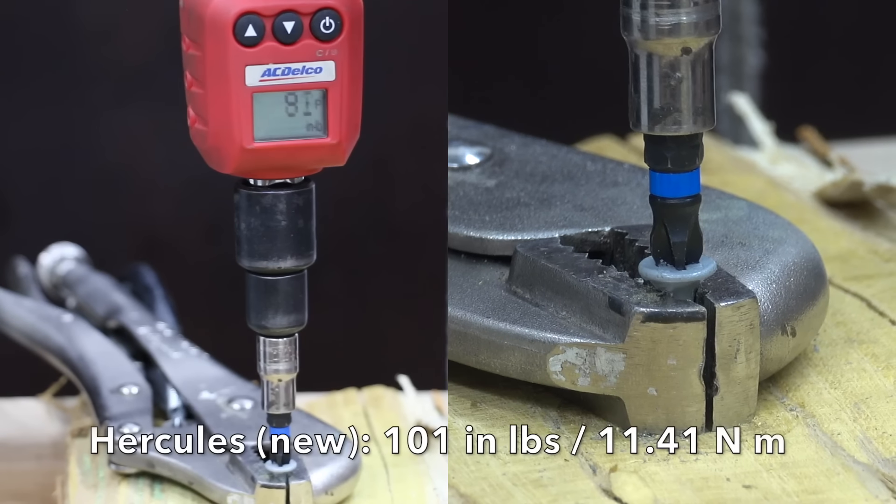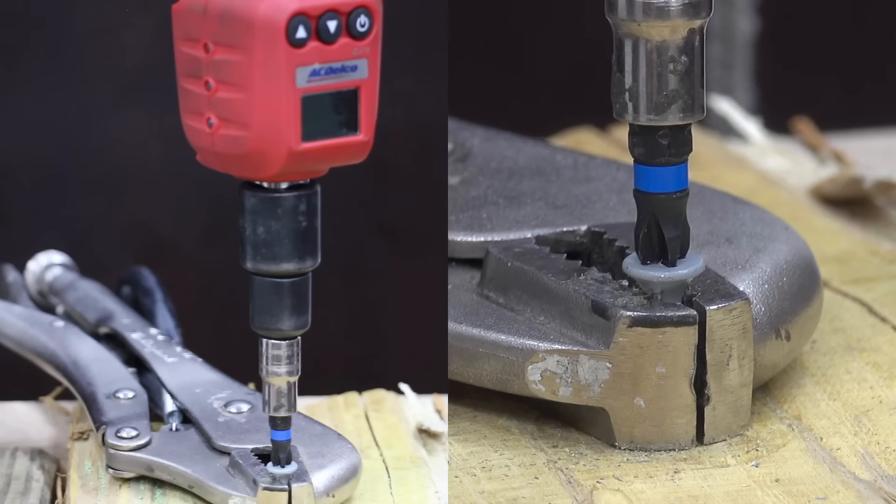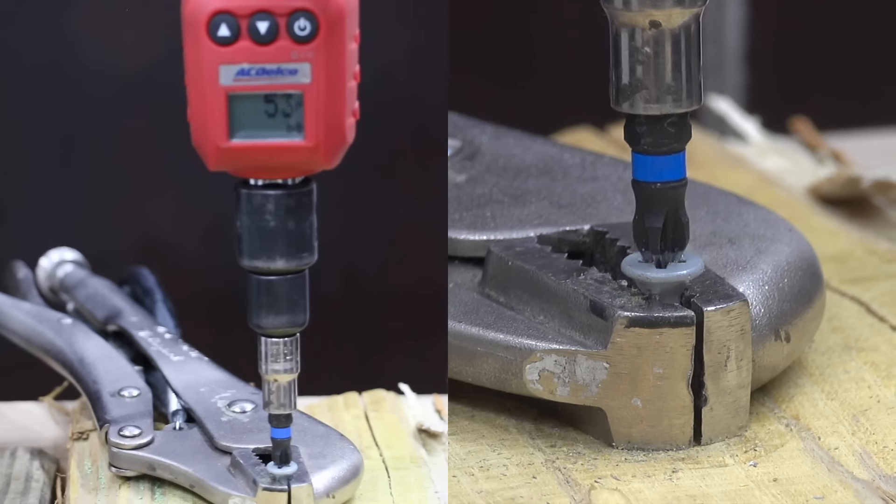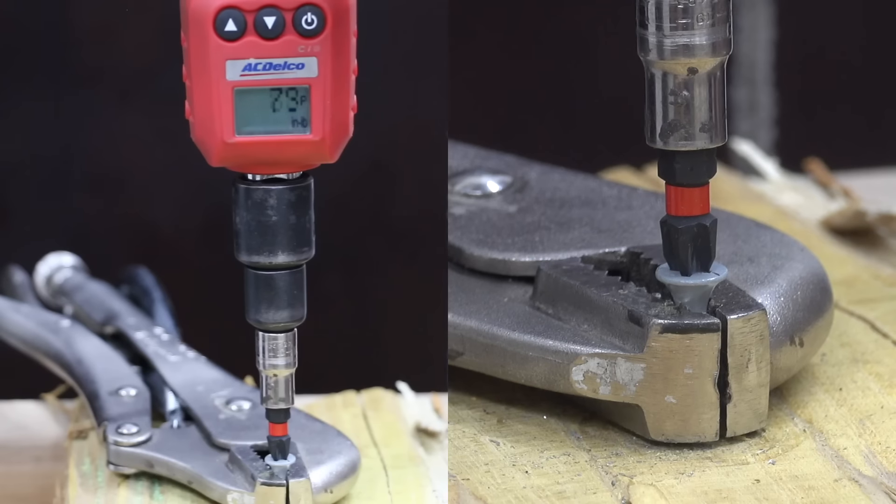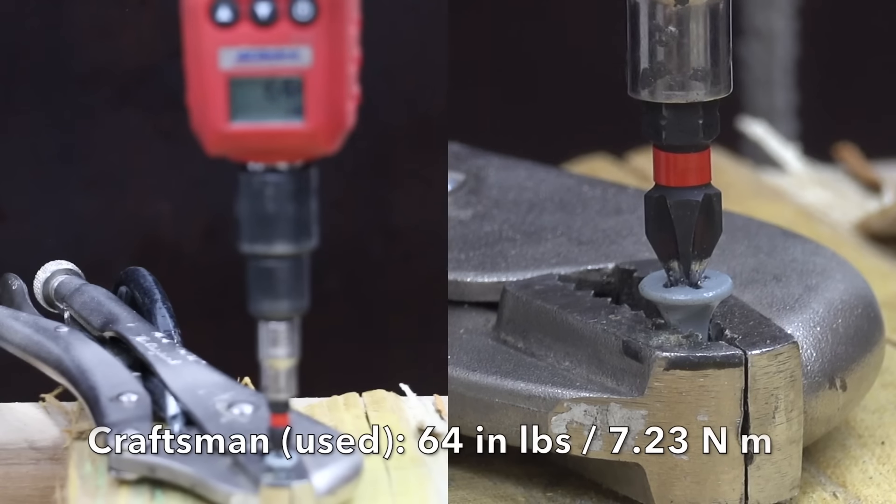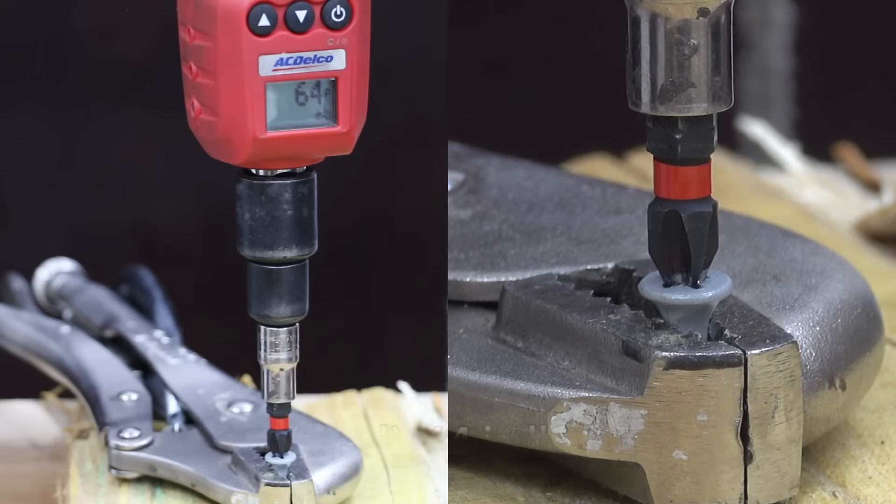The new Hercules did very well at 101 pounds, just one pound less than the Bauer. The used Hercules, which had a lot more visible wear than the Bauer, cammed out at only 53 inch pounds. The new Craftsman did fairly well at 95 inch pounds. The used Craftsman did better than the Hercules, but not as good as the Bauer at 64.